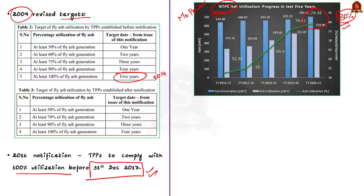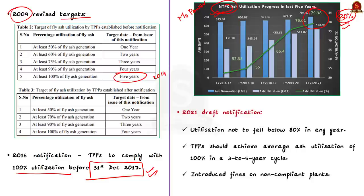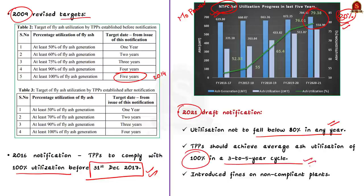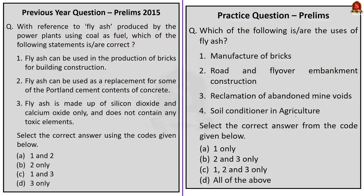To amplify compliance to 100% utilization, the Government of India introduced two draft notifications in 2019 and in 2021. The 2021 draft mandates that utilization shall not fall below 80% in any given year and the thermal power plant should achieve average ash utilization of 100% in a three to five year cycle. For the first time, it introduced the concept of fines for plants that are not complying with this notification. But this is only a draft, so once the final notification is notified by the government, we will see its other important provisions.